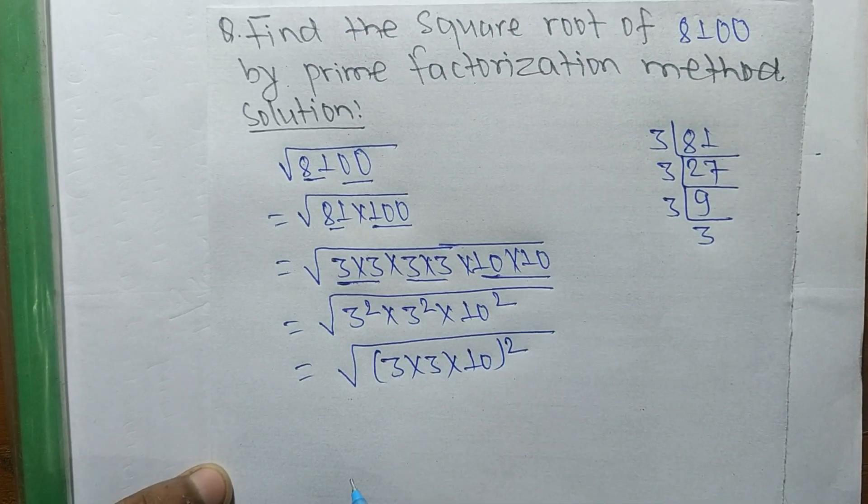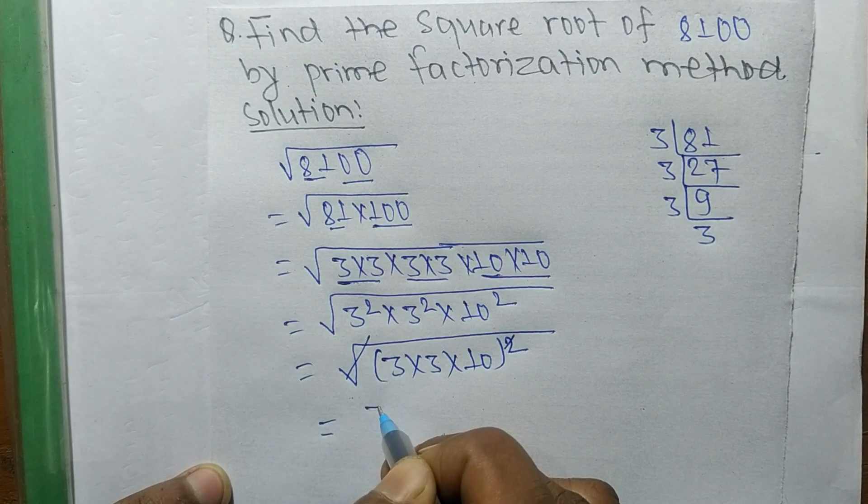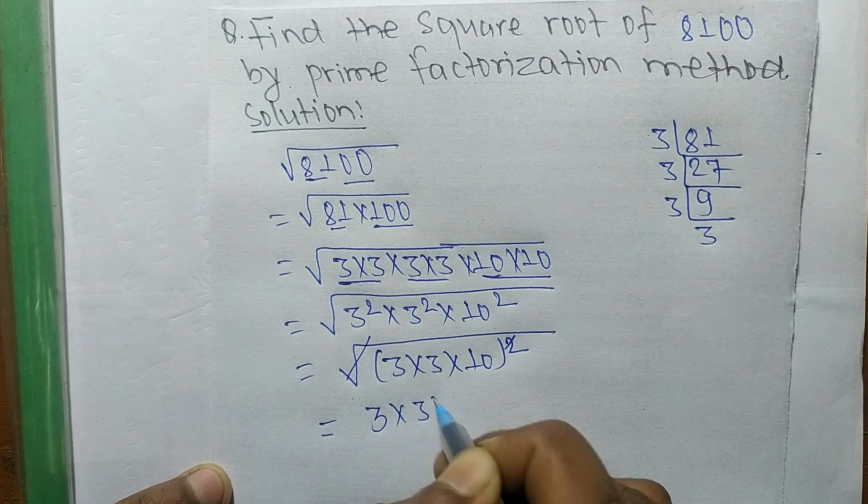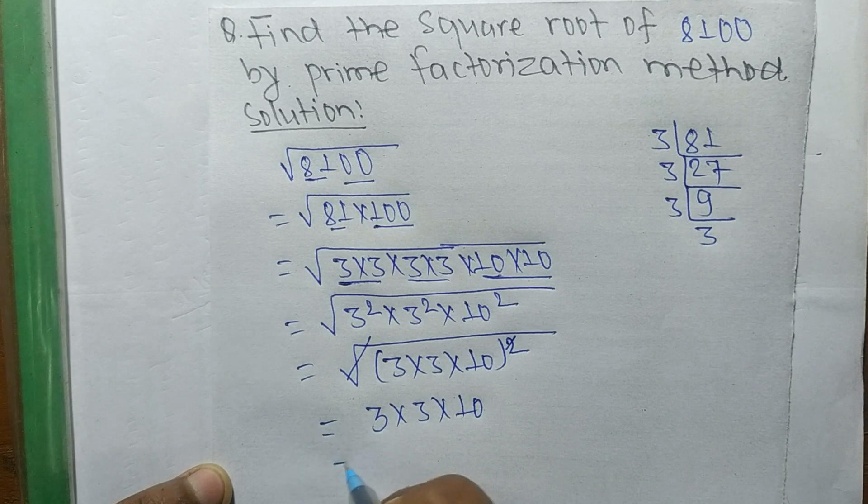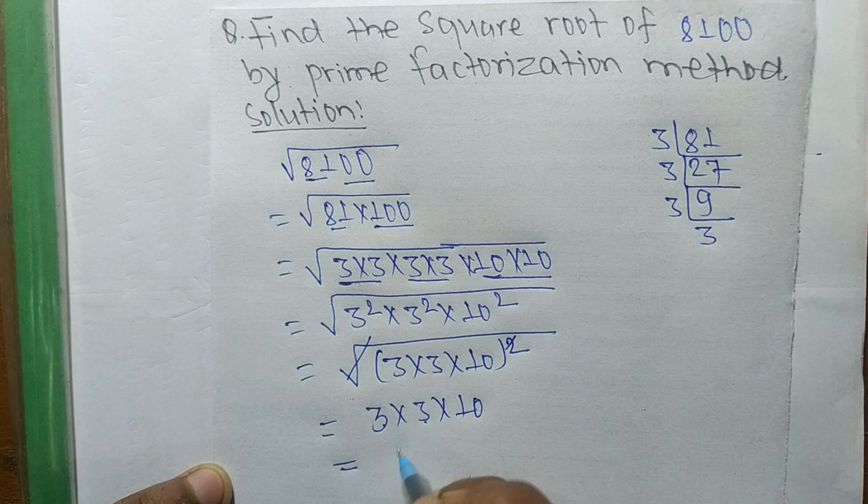The square and square root cancel each other, so the remaining part is 3 into 3 into 10. It is equal to 3 times 3 which is 9, and 9 times 10 which is 90.